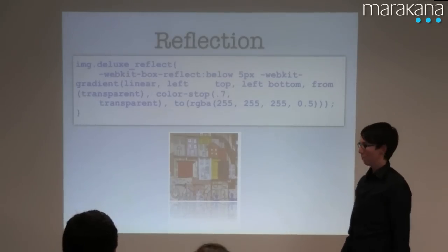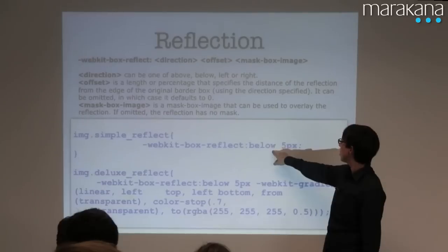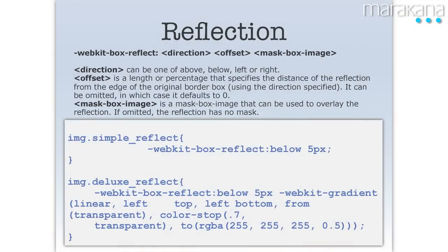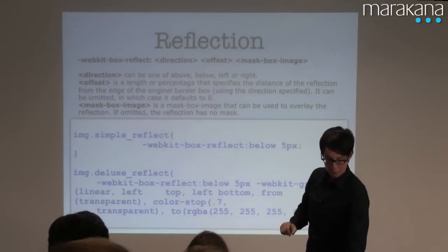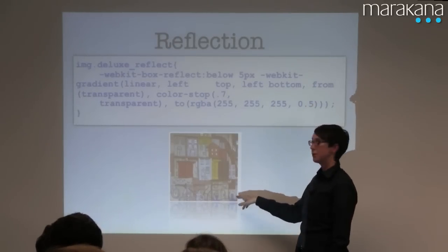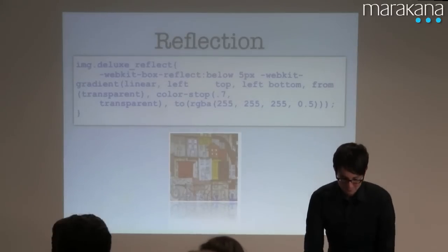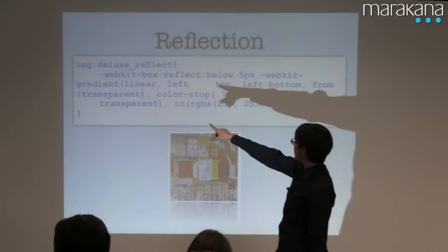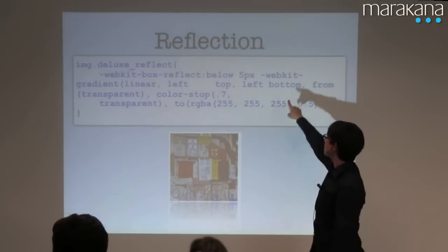Reflection is another one of these things you're used to just seeing in Photoshop, and you actually have a good deal of control. Here's the simple version — the minimal: you just say 'below', meaning the reflection is going to happen below the main image, with a 5-pixel offset — so 5 pixels away from the image. The point being is that you can overlay a gradient onto the reflection, so you get this sort of iTunes cover-flow look. You can see that the gradient actually comes in here, and it's added as part of this definition.